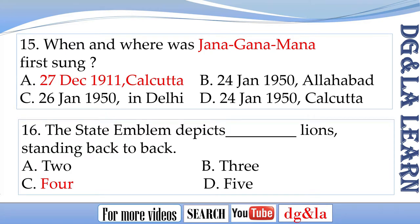Question 15 answer: Jana Gana Mana was first sung on A. 27th December 1911 in Kolkata. Question 16 answer: The state emblem depicts C. 4 lions standing back to back.